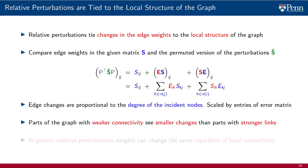Therefore, parts of the graph with weaker connectivity see smaller changes than parts with stronger links. For the weight of an edge ij to change by a relatively large amount, it must be that at least one of the incident nodes, either i or j, has a large degree.